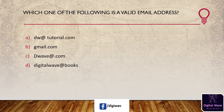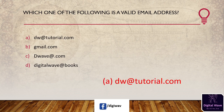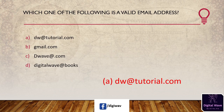Next question: which one of the following is a valid email address? Options are: dw@tutorialpoint.com, gmail.com, d.wave@dot.com, digitalwave@redbooks. The answer is dw@tutorialpoint.com. A proper email address is a combination of the email prefix and email domain, both in appropriate format. The domain appears to the right side of the @ symbol and the prefix appears to the left side. Here, 'dw' is the prefix and 'tutorialpoint.com' is the domain.